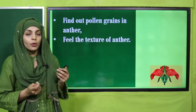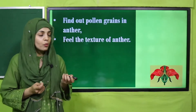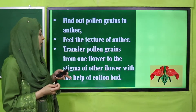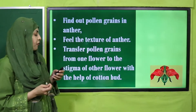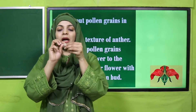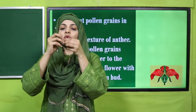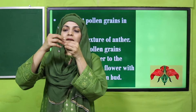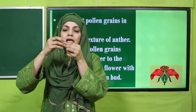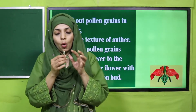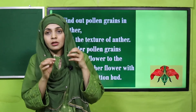Feel the texture of the anther — it feels powdery. Then transfer the pollen grains from one flower to another with the help of a cotton bud. I am using my fingers. Place it carefully on the stigma — the sticky part of the flower. Place it on the top of the flower. If you do this, a pollen tube is generated and it goes down towards the ovary.